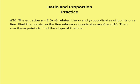Question number 26. The equation y is equal to 2.5x minus 3 relates the x and y coordinates of a point on a line. So we know the slope is 2 and a half. We know the y intercept is 0, negative 3. We want to find the points on the line whose x coordinates are 6 and 10. So we need to find now the y value of the coordinate because we have the x coordinate. Or we have the x value. Then use these points to find the slope of the line.